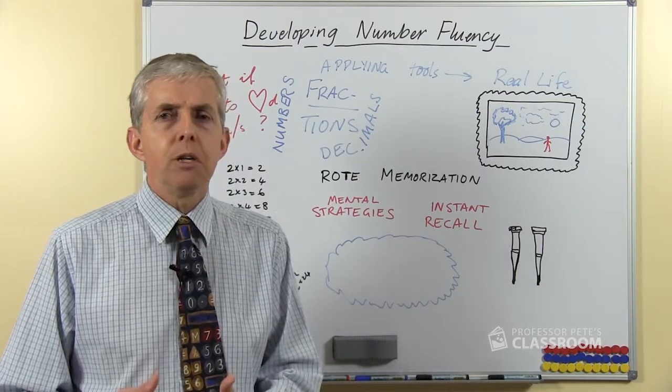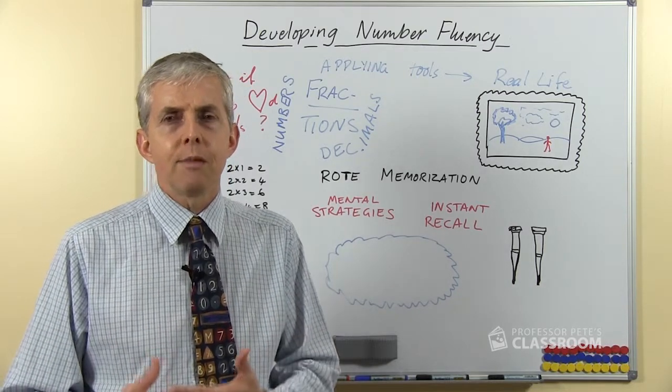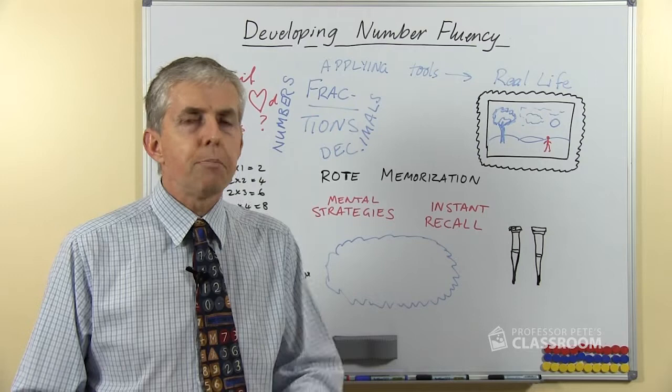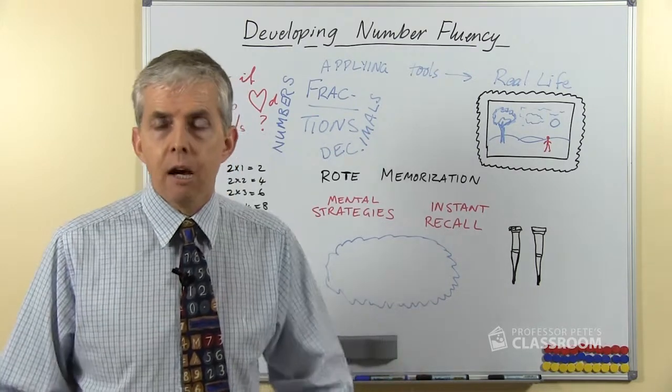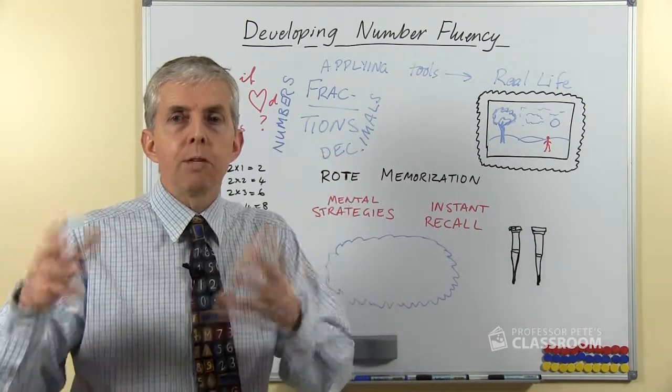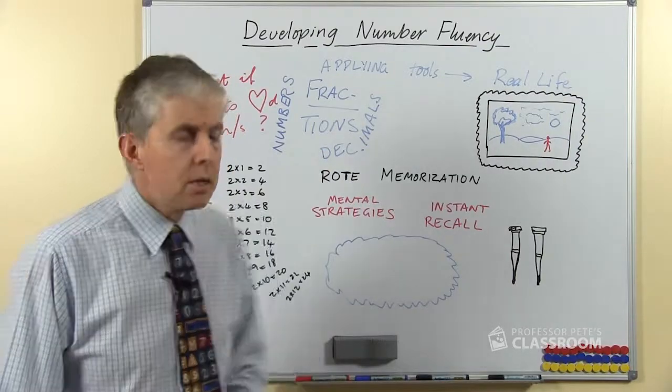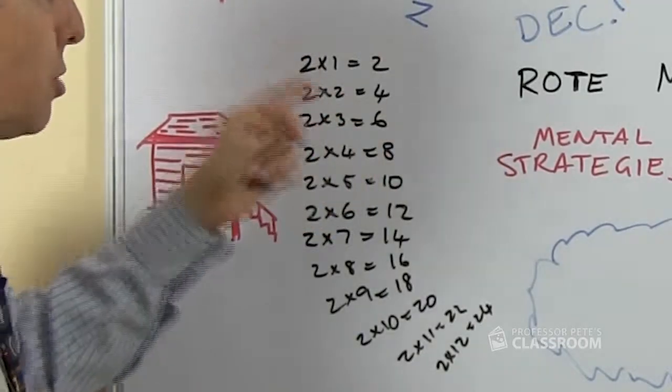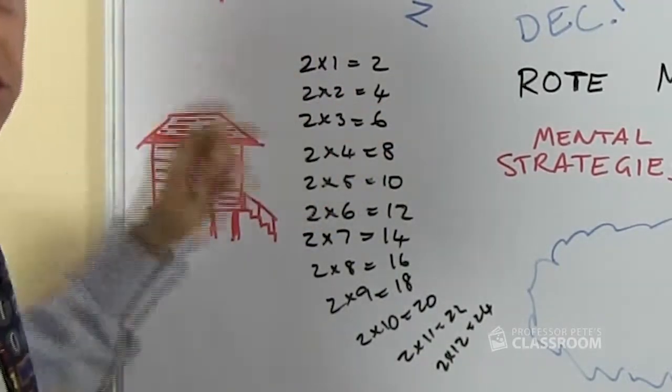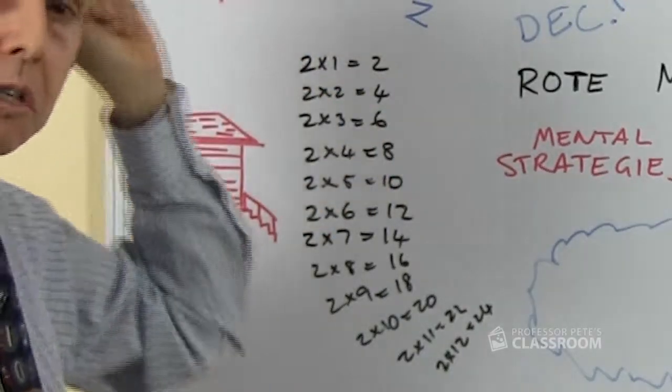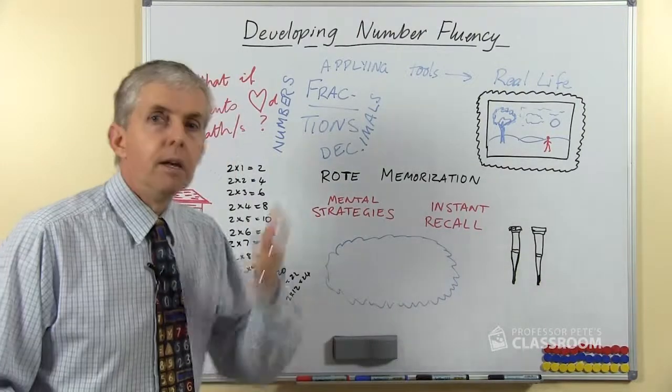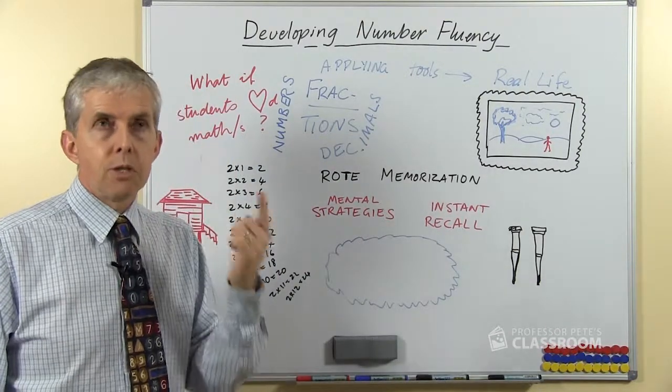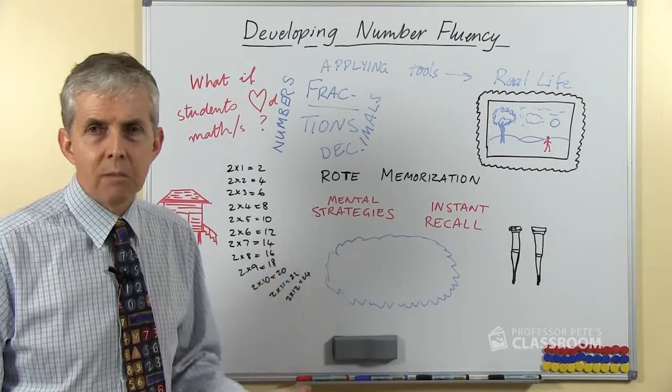If you're learning something by rote you're simply parroting something often enough that your brain remembers what it's heard basically. So if you repeat endlessly two ones are two, two ones are two, two twos are four, two twos are four, two threes are six, two threes are six and just keep doing that, eventually your brain will remember two threes are six because it's heard it so many times.